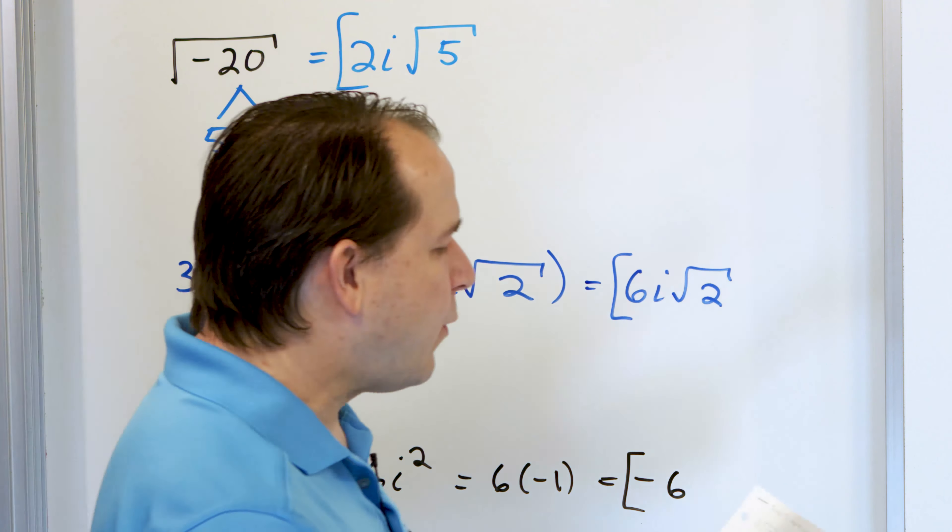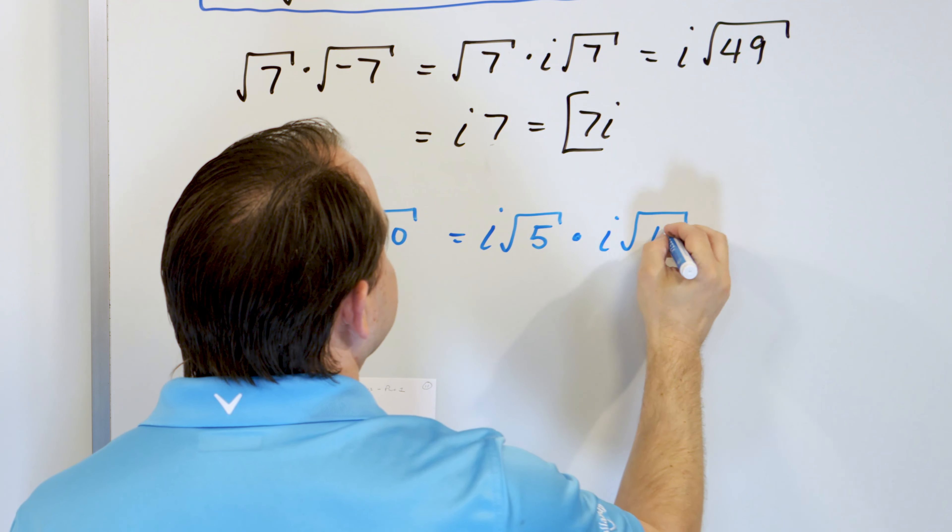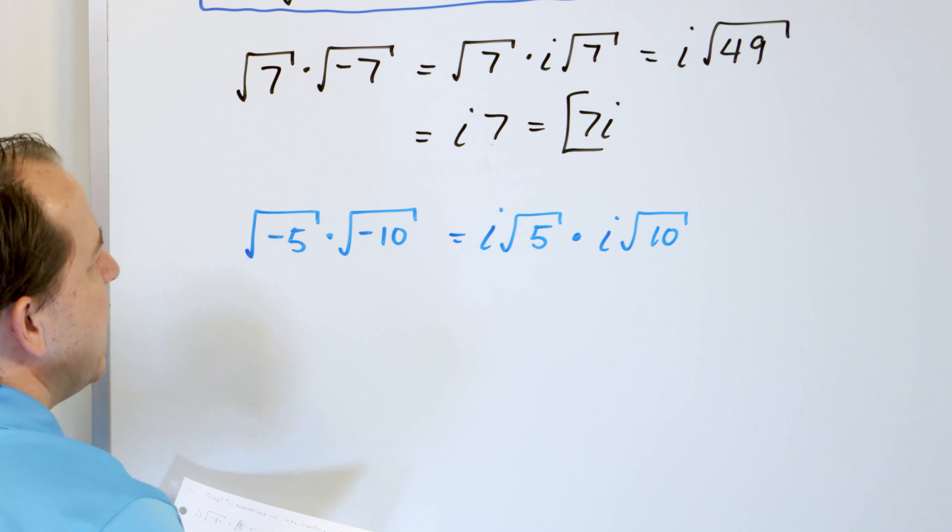Let's say you have the square root of 7 multiplied by the square root of negative 7. The square root of 7 I can't simplify further, so I leave it. The square root of negative 7 — the square root of negative 1 comes out as i, and the square root of 7 stays behind. So the i floats out in front, and you multiply the two square roots: square root of 7 times square root of 7 is square root of 49, which is 7. The answer is 7i.